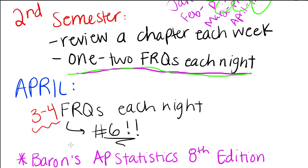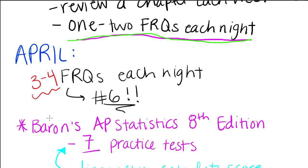And then come April, you guys need to definitely be doing three to four FRQs every night and have at least one of them be a number six. So every single night, you should be doing at least one number six for the month of April because number six in AP stats is a very, very important part in the FRQ section. It's worth like three points per answer.